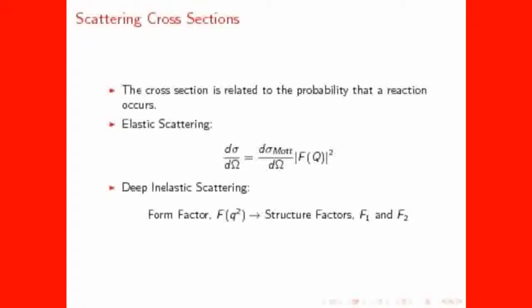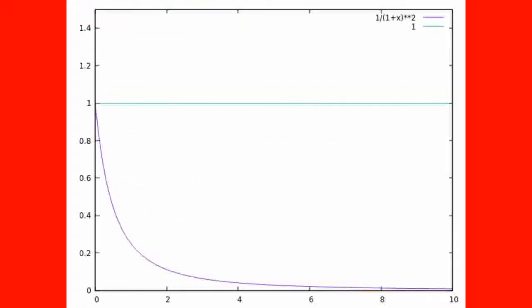In deep inelastic scattering the form factor is replaced by these things called structure factors, which are analogous to the form factors. Okay, so here is a graph of the form factor for a point charge in green and a proton in purple.